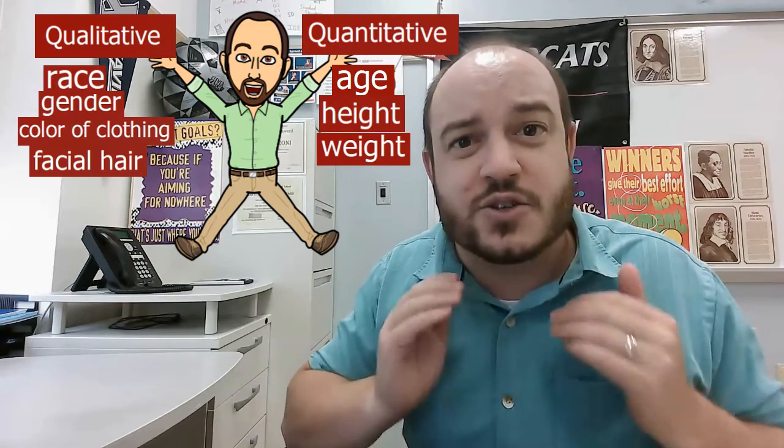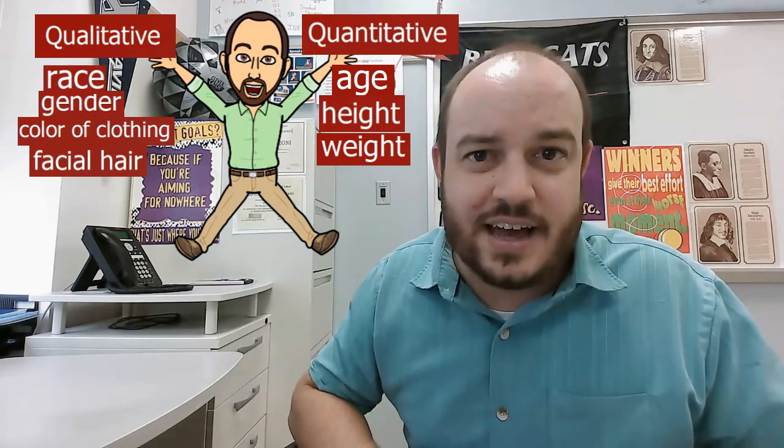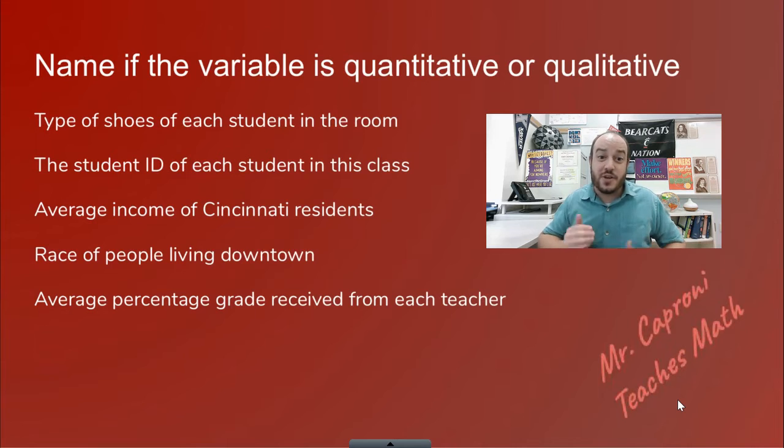Let's go down this list and see if we can decide which of the two types of variable each one is. Go ahead and try this on your own first by hitting the pause button, and then once you think you got a label for each one, hit play and we'll go through the answers together.